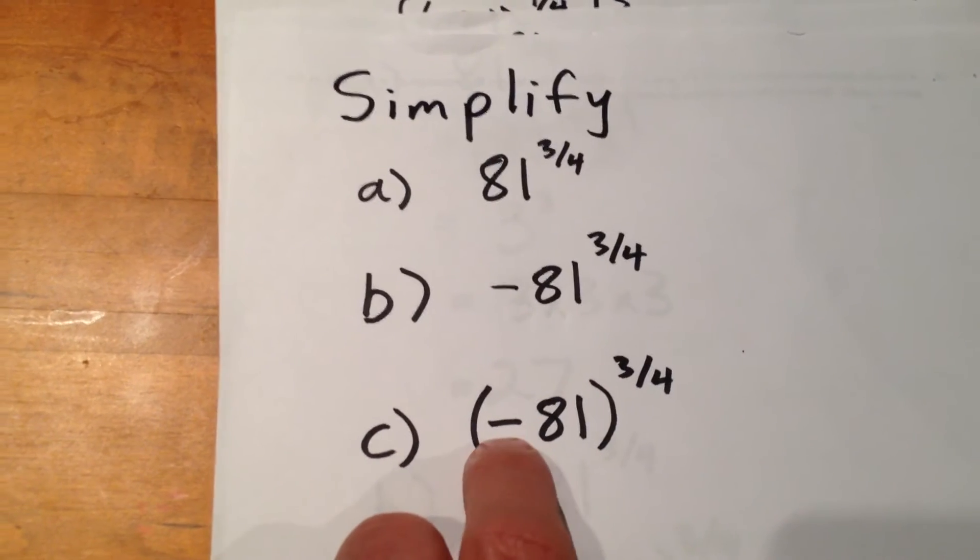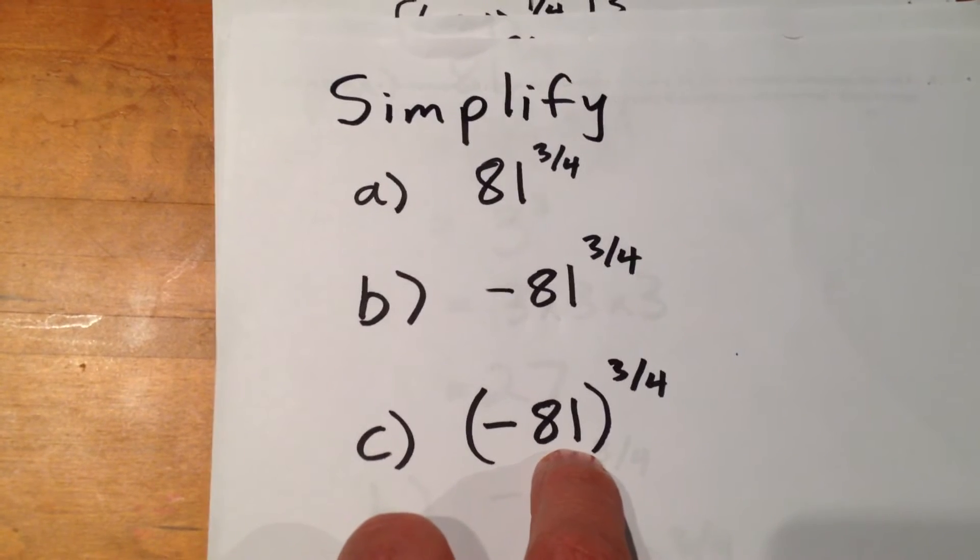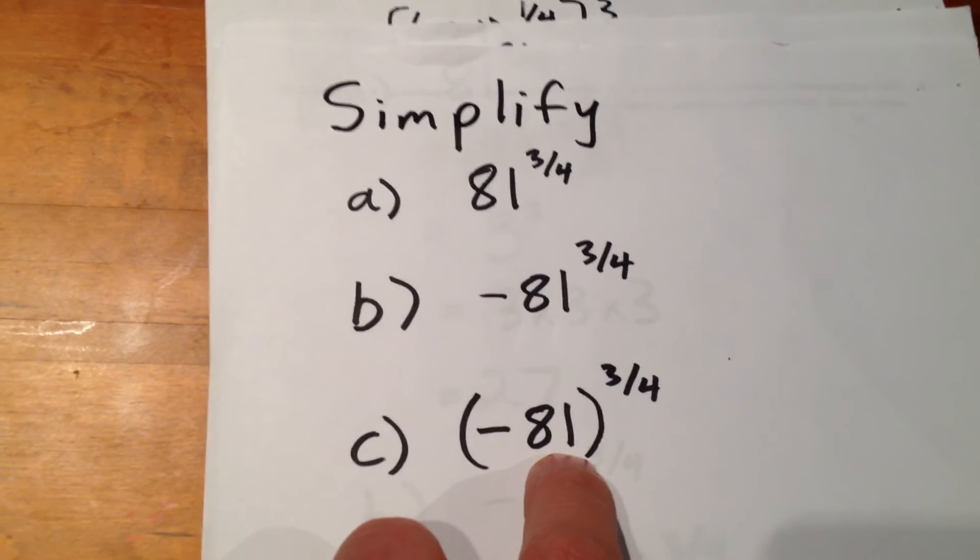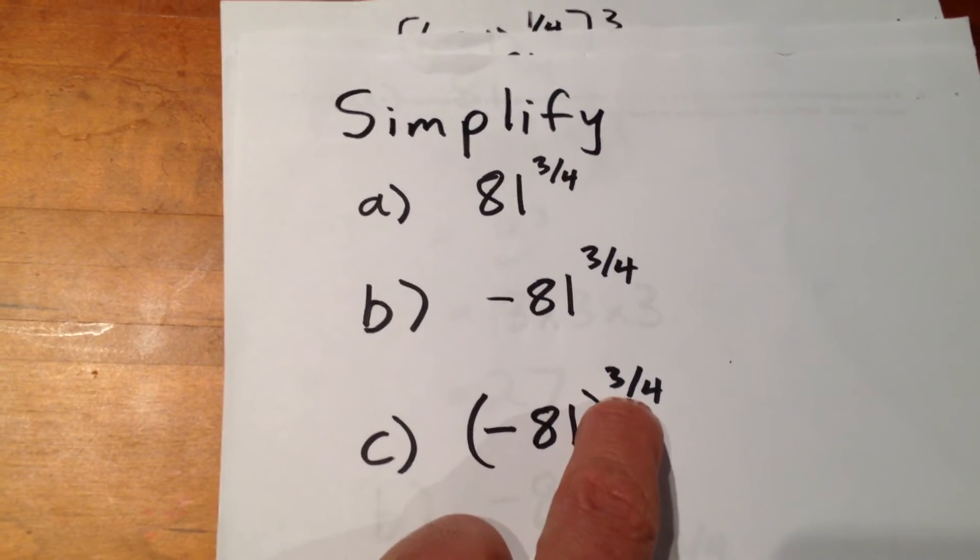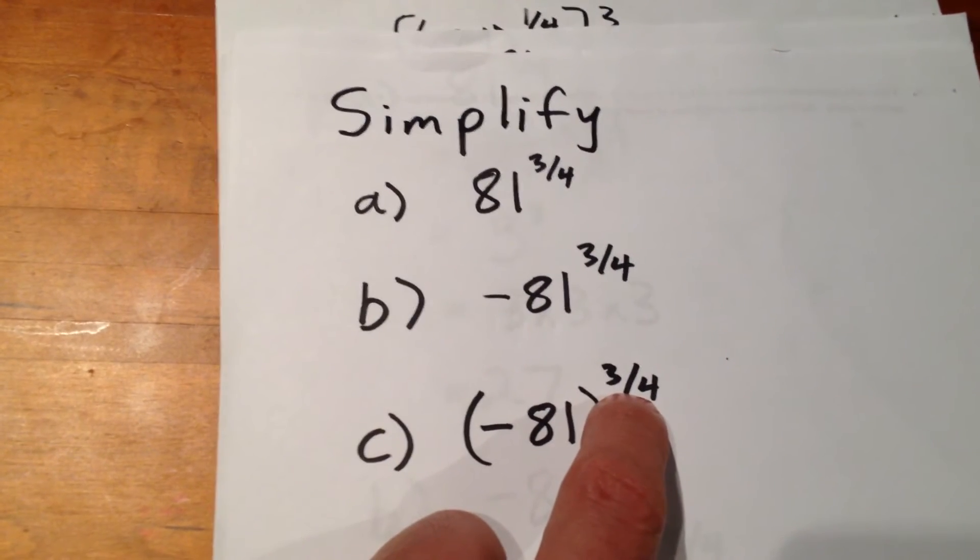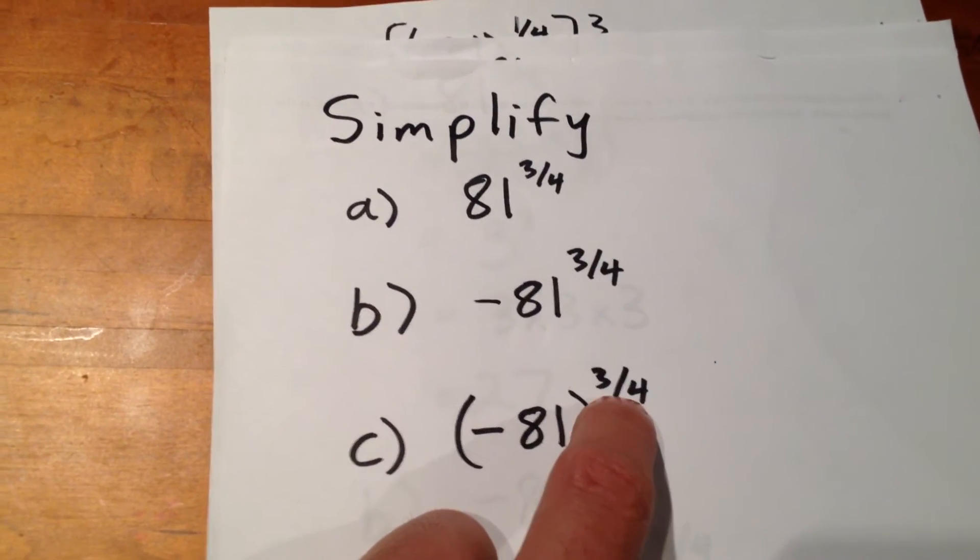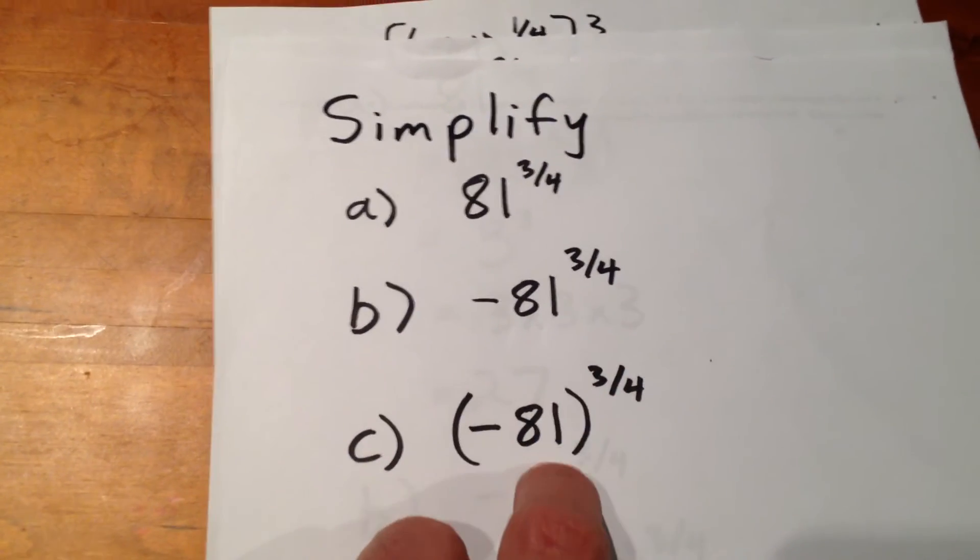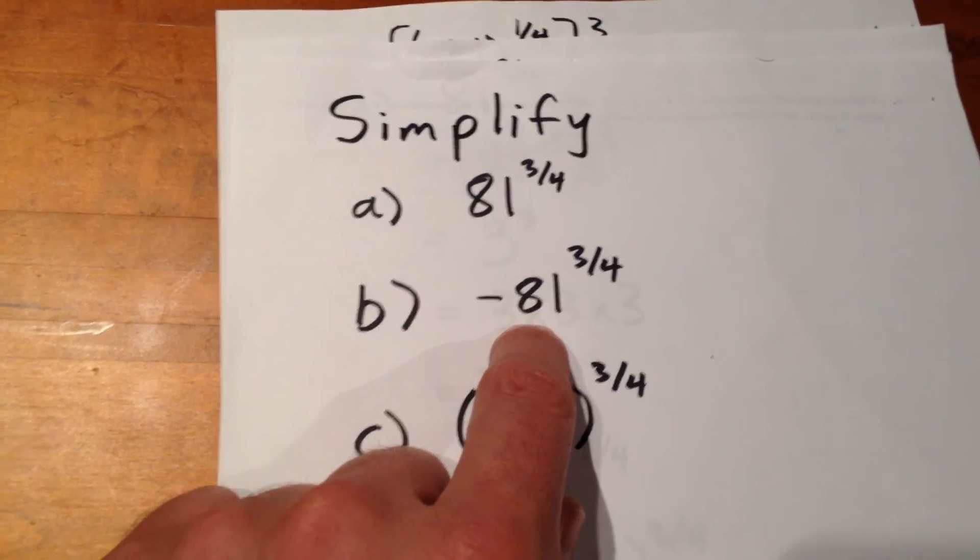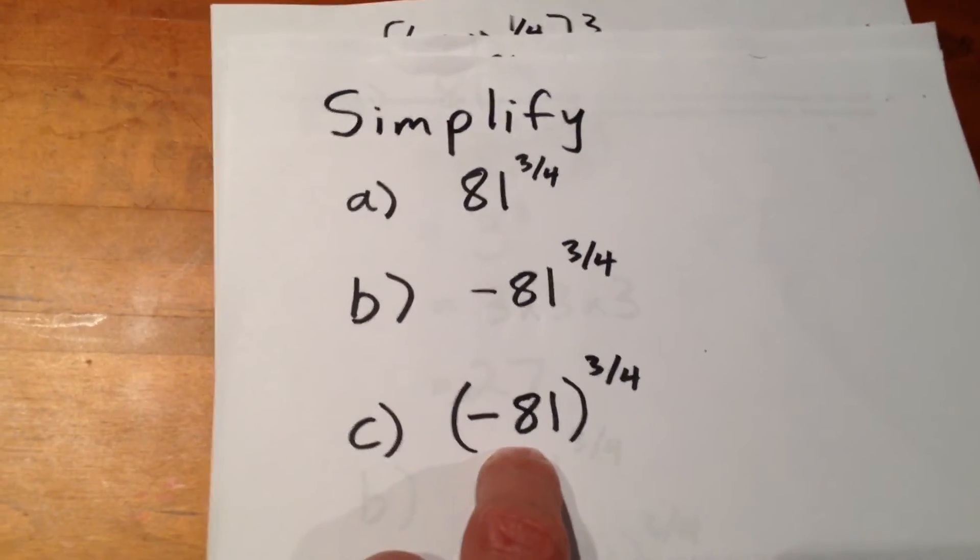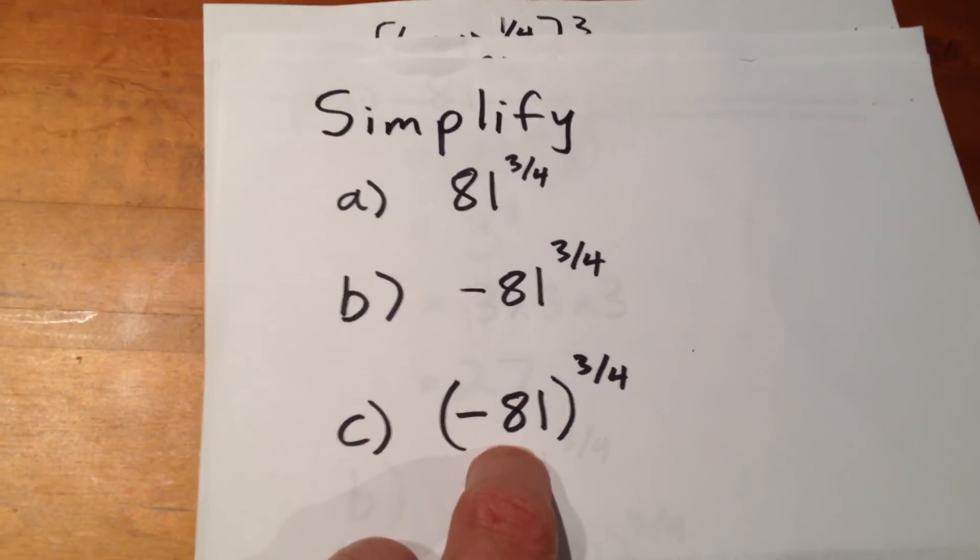Well, that means we have to figure out the fourth root of negative 81, and then cube that. That's what we've been doing. We've been determining the two factors of 3 quarters as being 1 quarter and 3, and then determining the fourth root of the base. Well, in these two questions, the base was 81. In this question, the base is negative 81. So, we're going to have to determine the fourth root of negative 81.